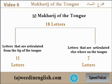Makharij al-lisan is about the points of articulation of the tongue. In Arabic language, most of the letters are produced and sound from the tongue. The Arabs have pronounced these letters using the front, which is the tip of the tongue, then the sides of the tongue, and also the middle or at the back, which is the epiglottis.